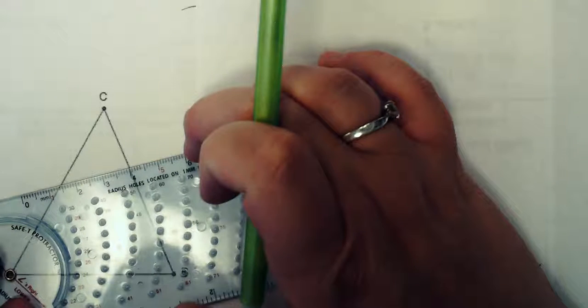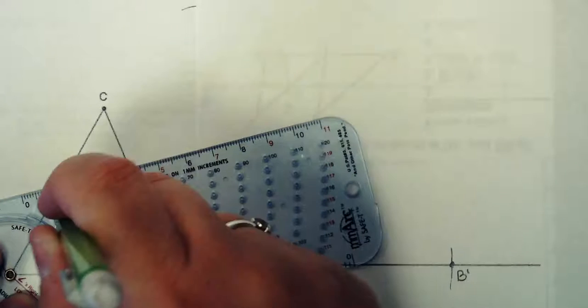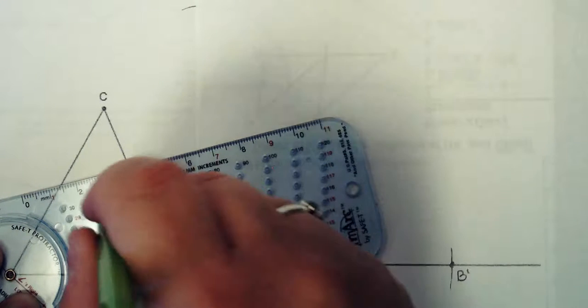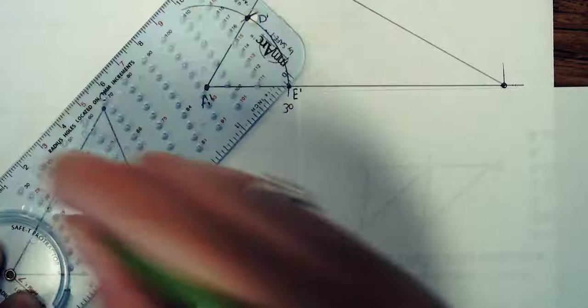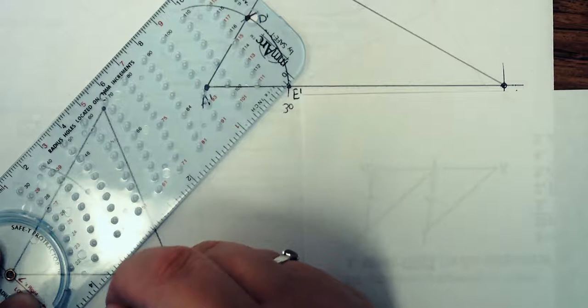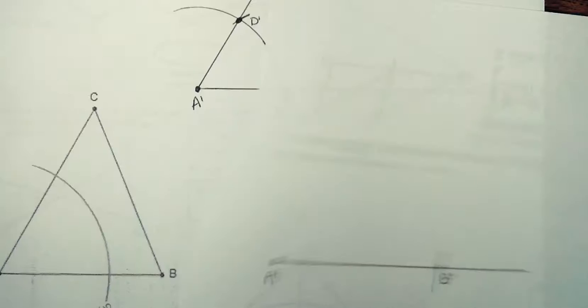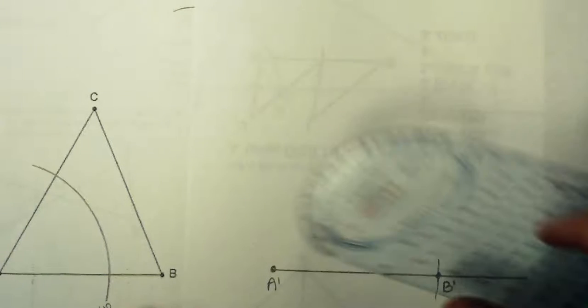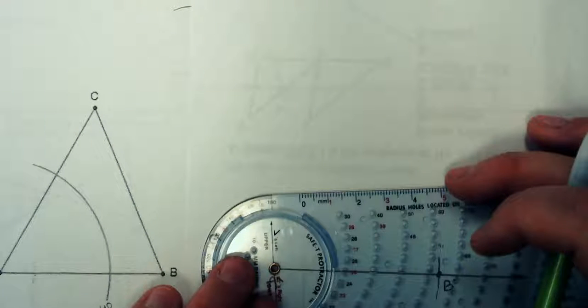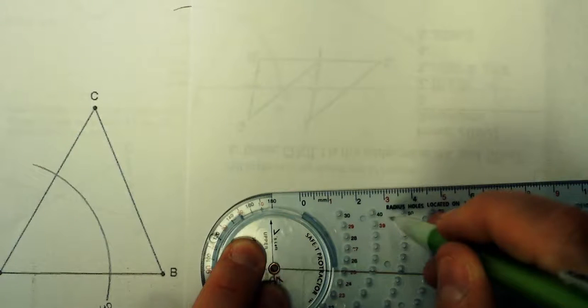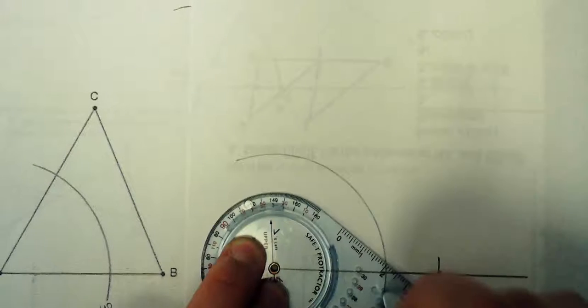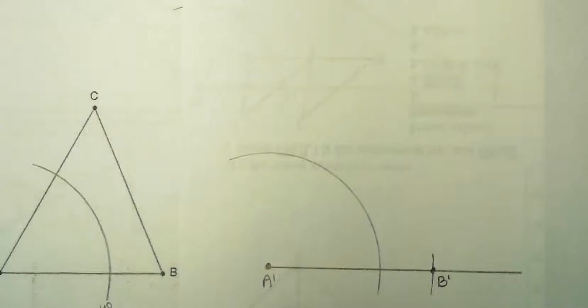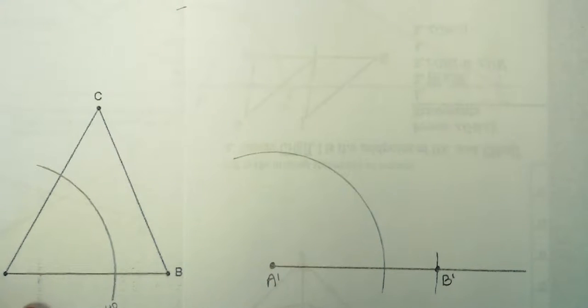So to copy an angle, you're going to go to the original. I'm just going to make an arc that just needs to touch both sides. Now, whatever you use, I'm going to use 40 here. I need to come over and use the same thing on my other paper. So I used 40, so I'm just going to make an arc about the same size. Maybe a little bit bigger there. That was using the 40.